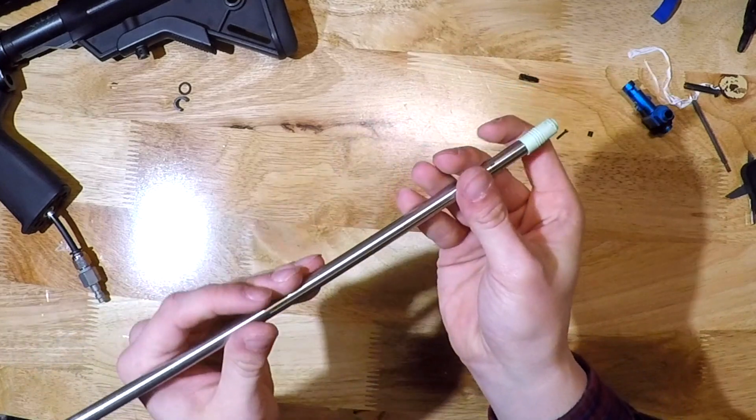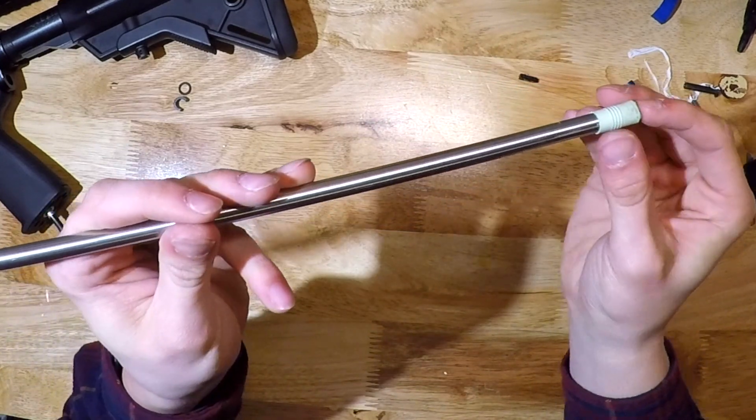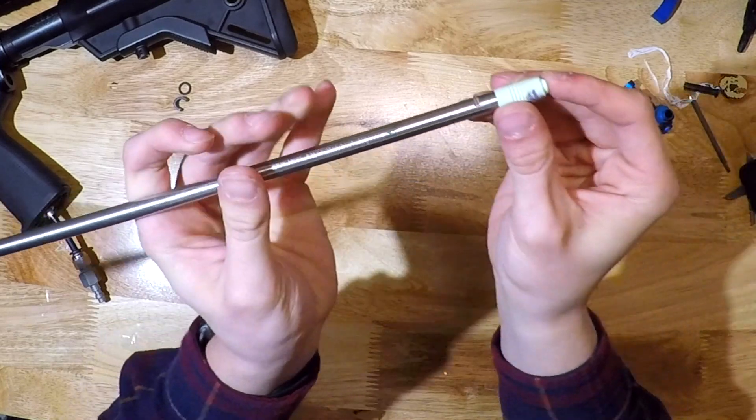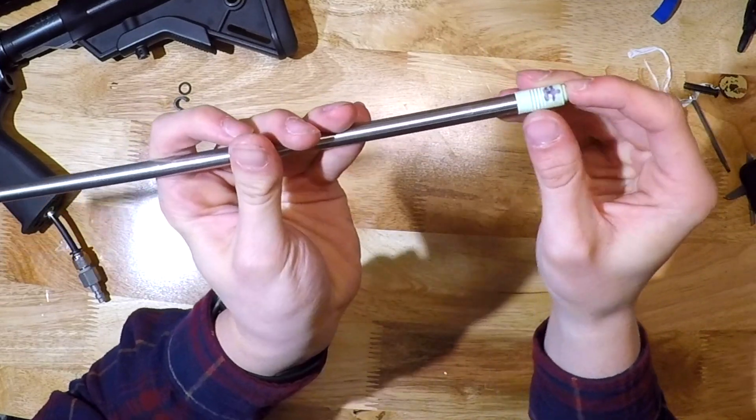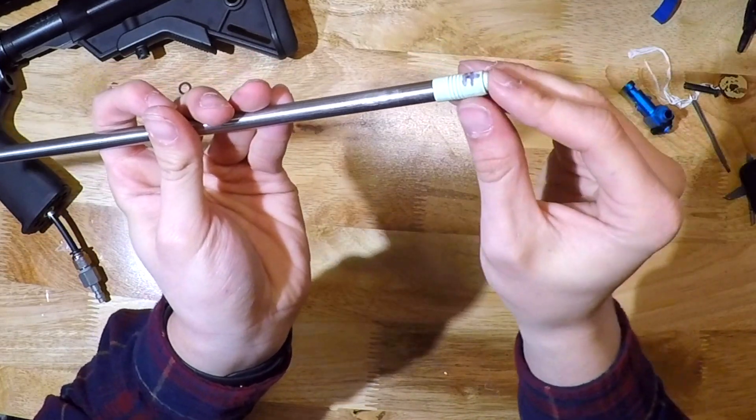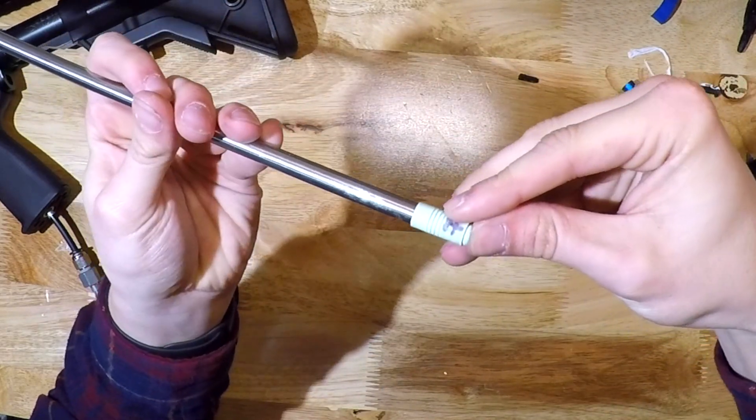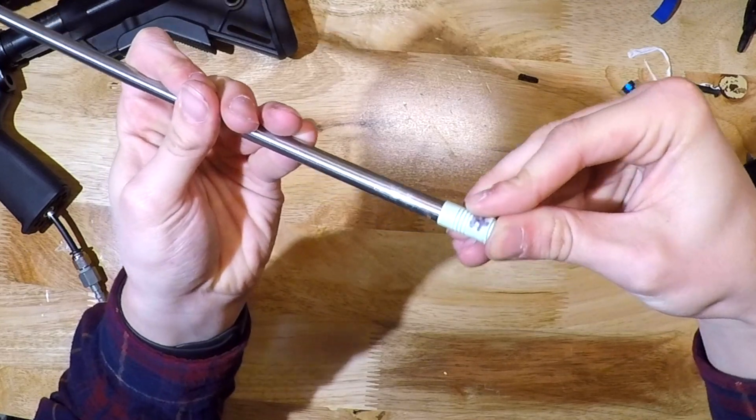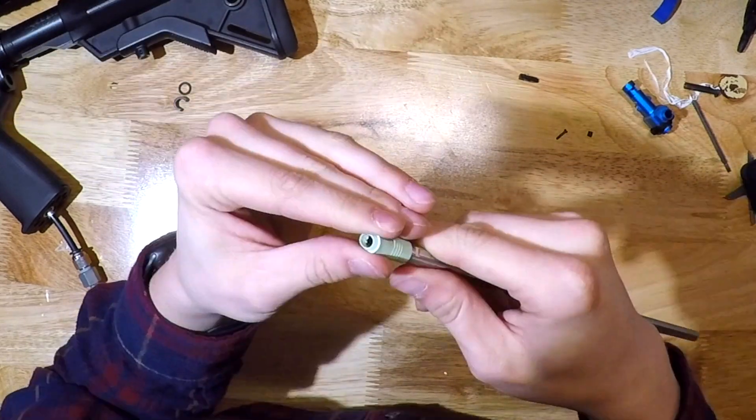And to put this on, you want to align the notch on the bottom of the hop up rubber with the notch on the bottom of your barrel. And you just want to push it on. And once you get to that resistance point of the window and the rubber cutout in your hop up rubber, just sort of lift it up if you need to. But if you just push a little more, it should go on. Again, you don't want to force it. There we go.